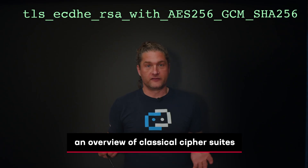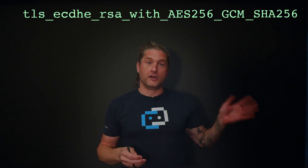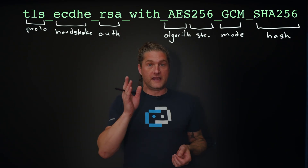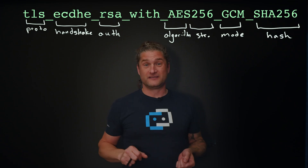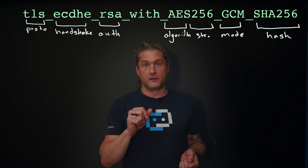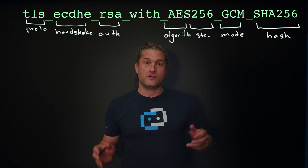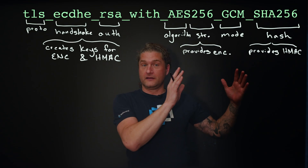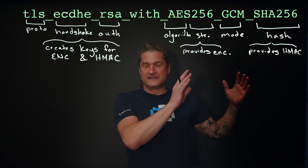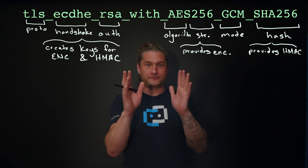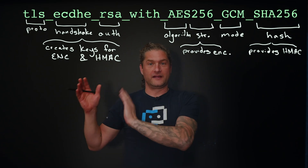Here we have a cipher string — modern classical cryptography: TLS ECDHE-RSA with AES-256-GCM mode SHA-256. You see it everywhere. Protocol handshake, authentication — AES is our algorithm, 256 is the strength, GCM is the mode, and SHA-256 is our hash. The first part creates keys and provides authentication.